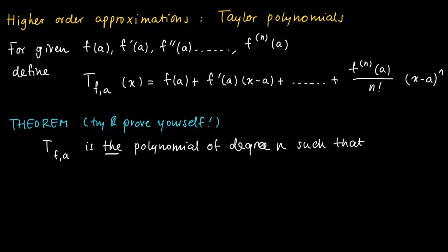The nth order Taylor polynomial is the unique polynomial of degree n such that: the function value in a agrees with f(a), and all its derivatives in a until the nth derivative agree with the corresponding derivatives of f.